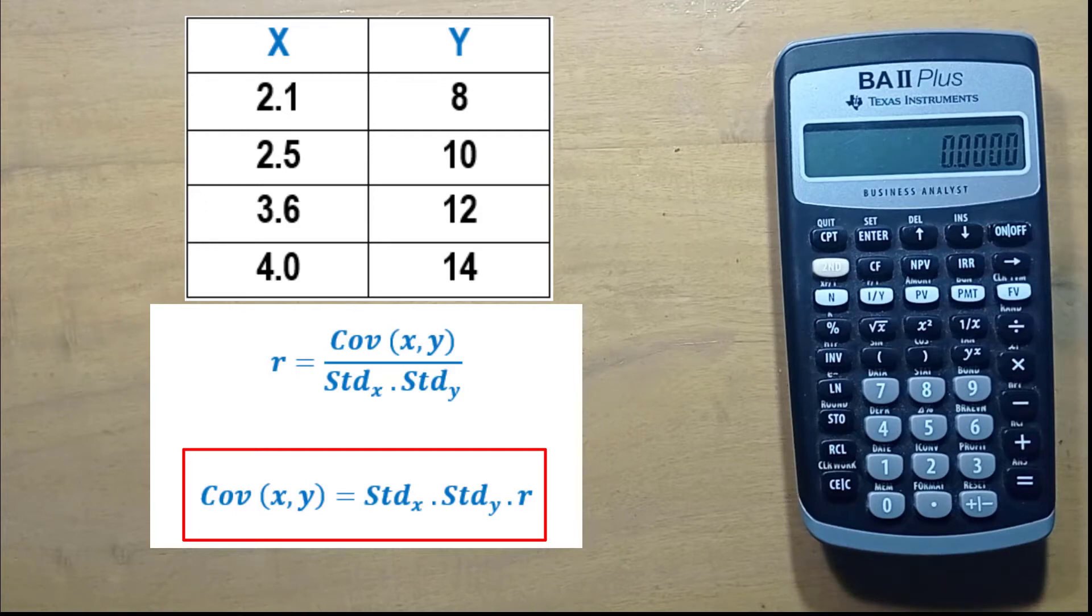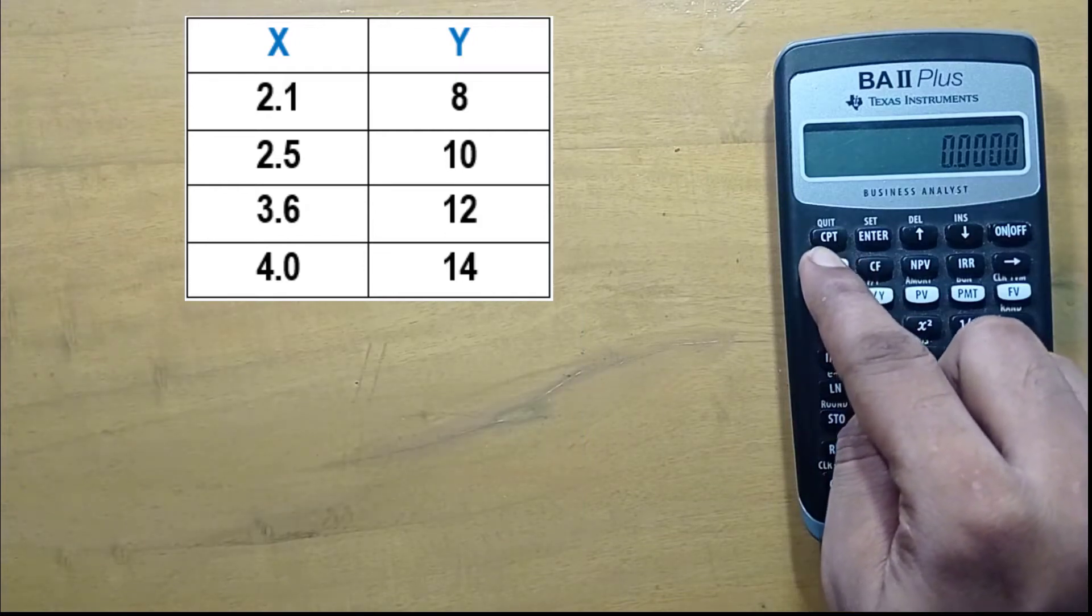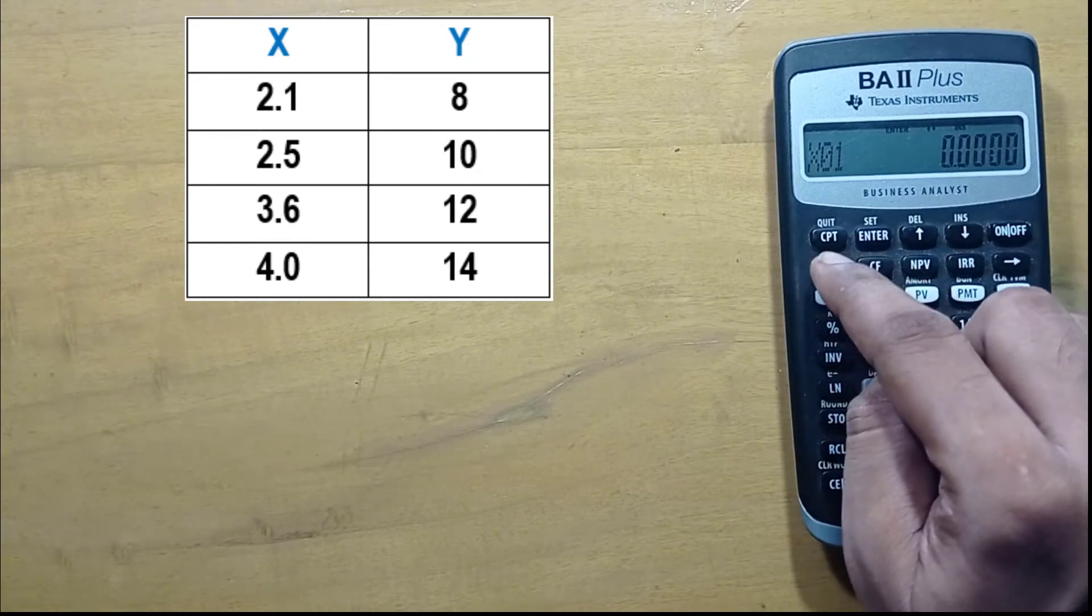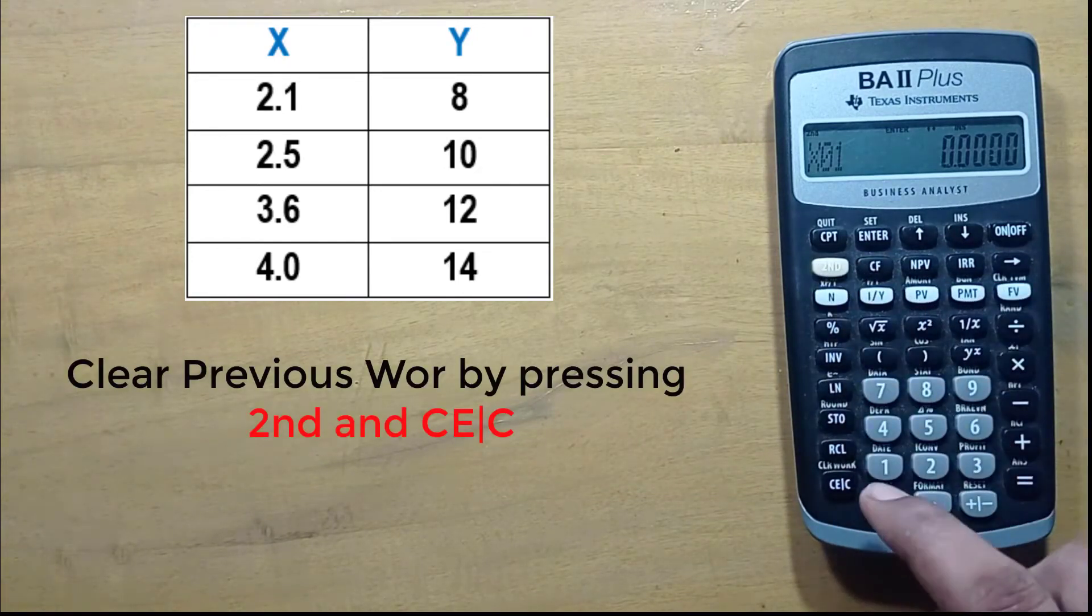First, to enter data, press 2nd and 7. Clear previously done work by pressing 2nd and C.